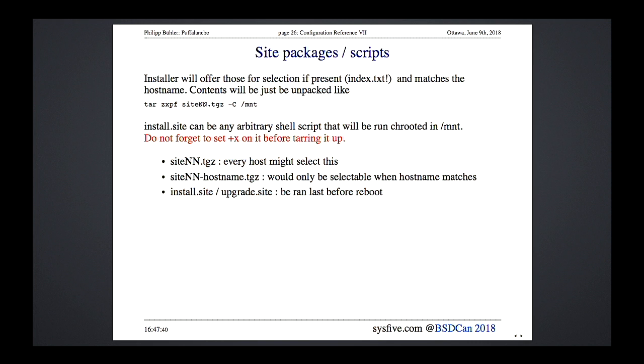The installer can look for additional packages named site{nn}.tgz — where nn is the release number, like base63.tgz — and also per-hostname. If you're installing in different data centers and need special configurations or binaries, you can have a generic site tarball and then hostname-specific ones, allowing per-host snowflaking of machines.